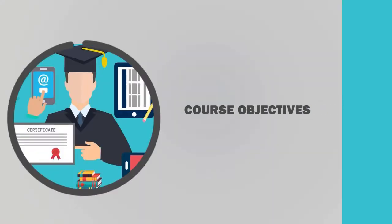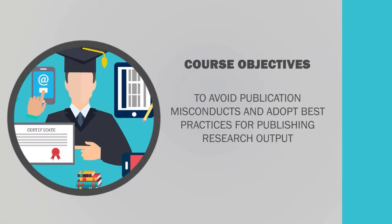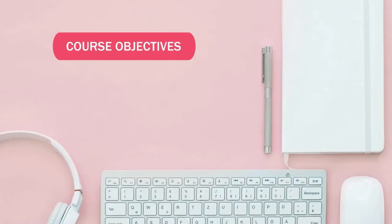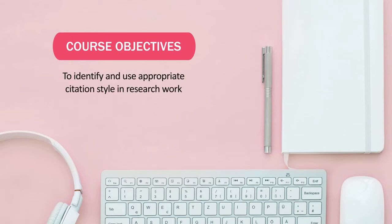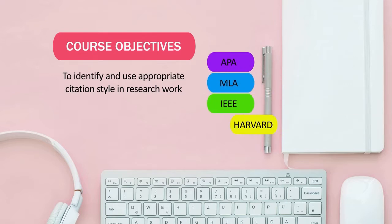This course will also help you avoid publication misconducts and adopt best practices for publishing your research output. Many researchers struggle to find appropriate citation styles in their research work, so this course will deal with different citation styles — APA, MLA, IEEE, Harvard, or any other — so that you can identify and use the appropriate citation style for your work.